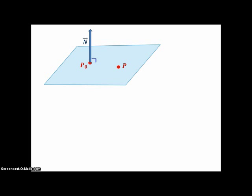And the vector connecting it to the fixed point, then, would be P0P. And if we dot those two vectors together, because N is perpendicular to the plane, it's going to be perpendicular to any vector in the plane. And therefore, the dot product will always be zero.